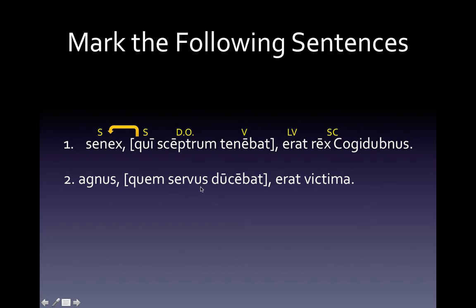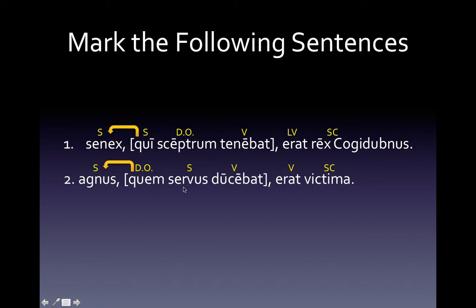Number two: I have 'quem serwis duquebat' in brackets because that's our relative clause. Here are the markings for everything. 'Quem' is accusative and singular — it's masculine. So we want to look at the fact that it's masculine and singular in order to identify its antecedent. 'Agnes' is masculine and singular, so that is its antecedent. This is going to read: 'the lamb which the slave was holding was the victim.'